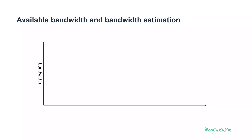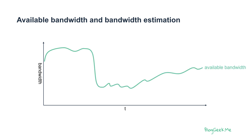To understand bandwidth estimation, let's first understand what available bandwidth is. I've got here a timeline on the x-axis, and on the y-axis I've got bandwidth. Over time, the available bandwidth in our network can change. It fluctuates based on the local network conditions, as well as what happens between us and the server we're communicating with. Things that affect it are congestion in the local network, someone looking at Netflix at the same time, and it can be in the remote network or anywhere in between.